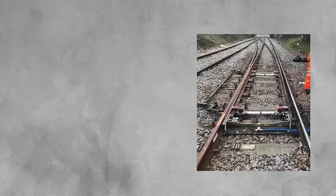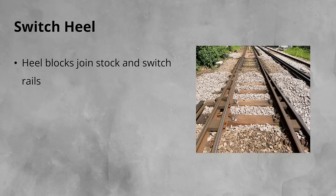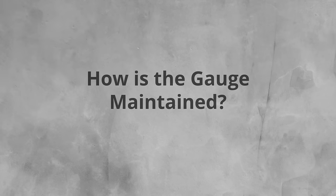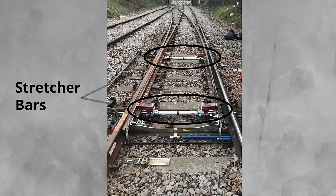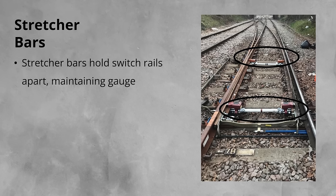At the opposite end of the switch to the toe is the switch heel. At the heel we have heel blocks. These blocks join the stock and switch rails together, normally with high tensile bolts. At the heel blocks we can also see the radius of the different groups. Given that both switch rails are free, unlike the stock rails, the gate is maintained through the use of stretcher bars. These hold the switch rails the correct distance apart, and ensure that when the switches are swung, both switch rails move in tandem. The longer the switch, the more stretcher bars are required.